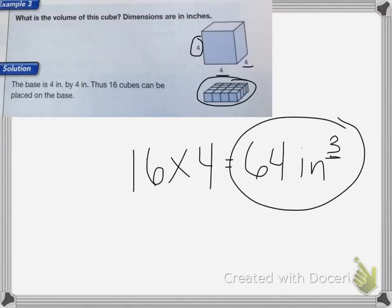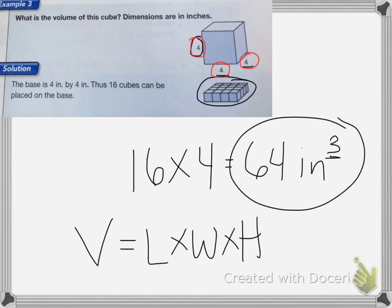The formula we get to find the volume is equal to the length times the width times the height. So the length of my object was 4, my width was 4, and my height was 4. So 4 times 4 times 4 is equal to 64 inches cubed.